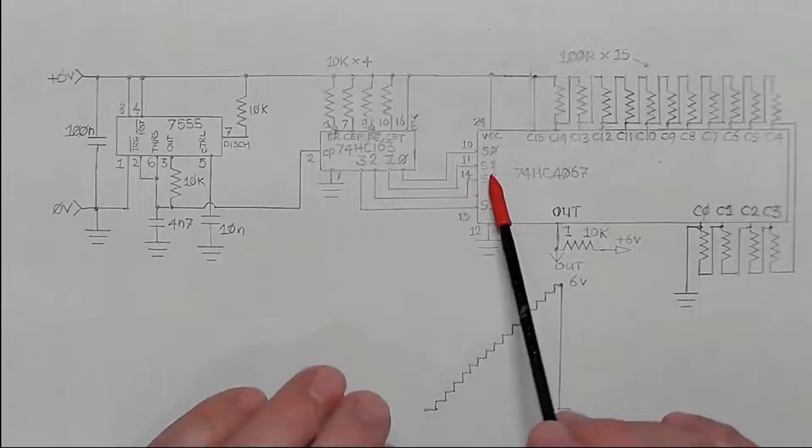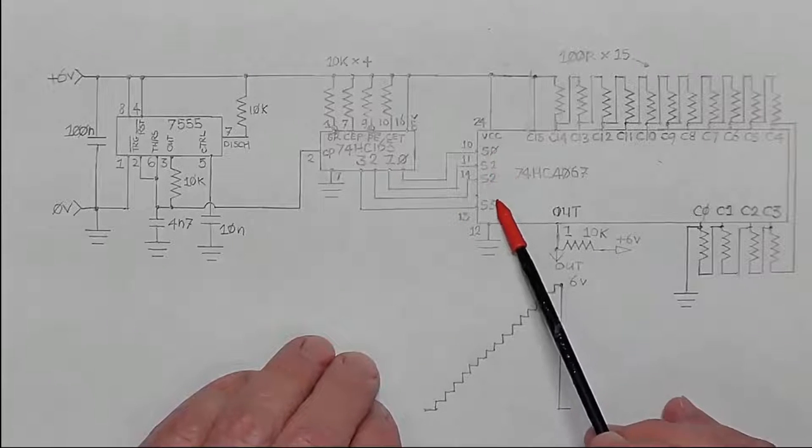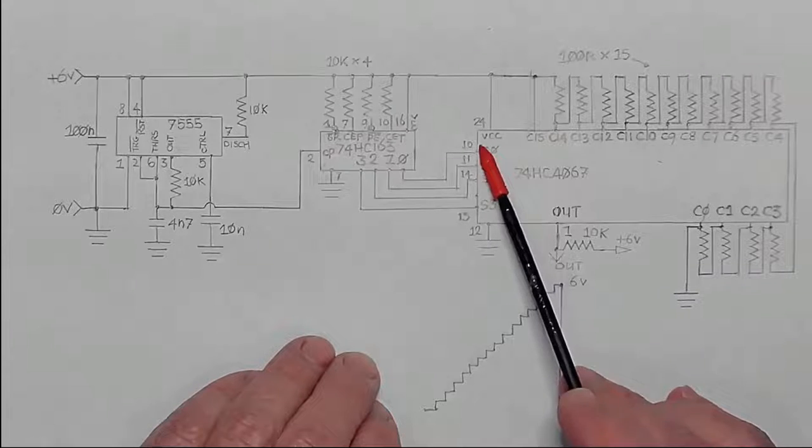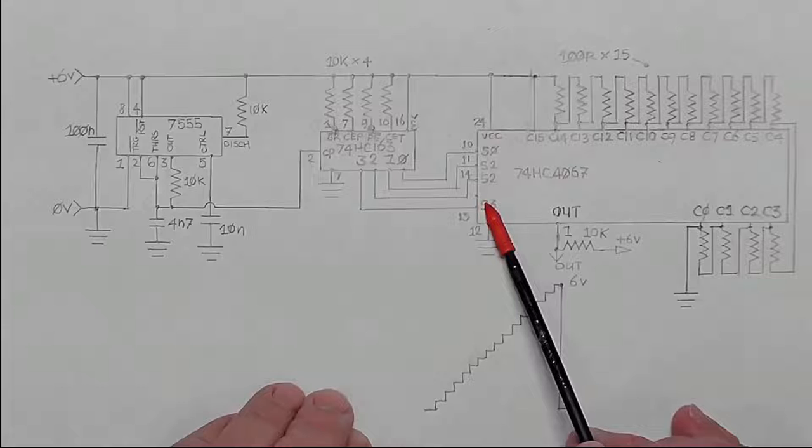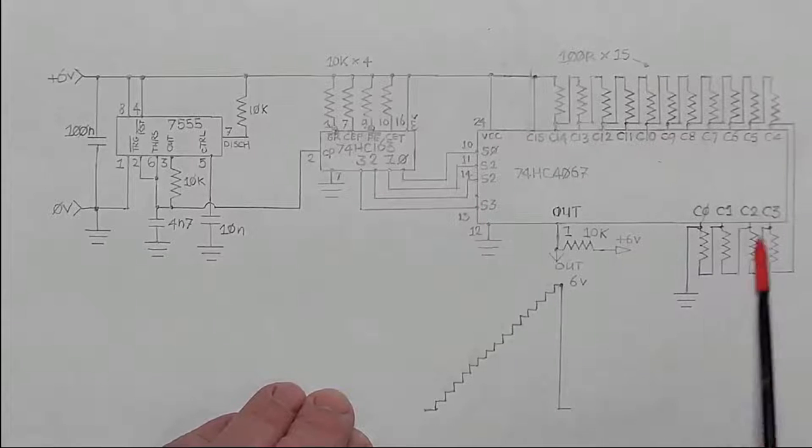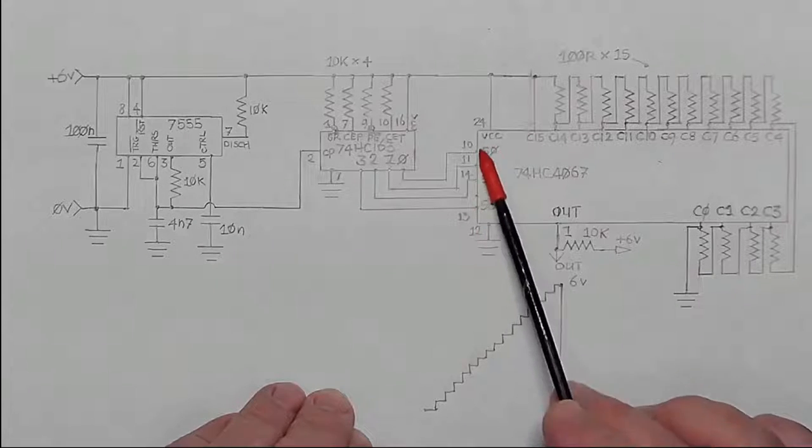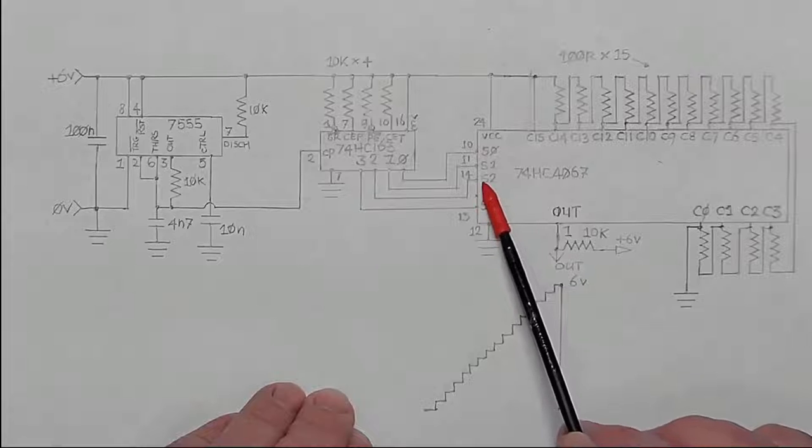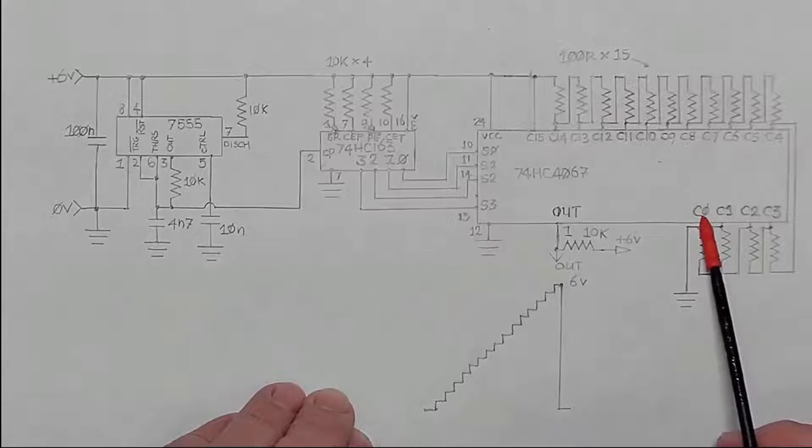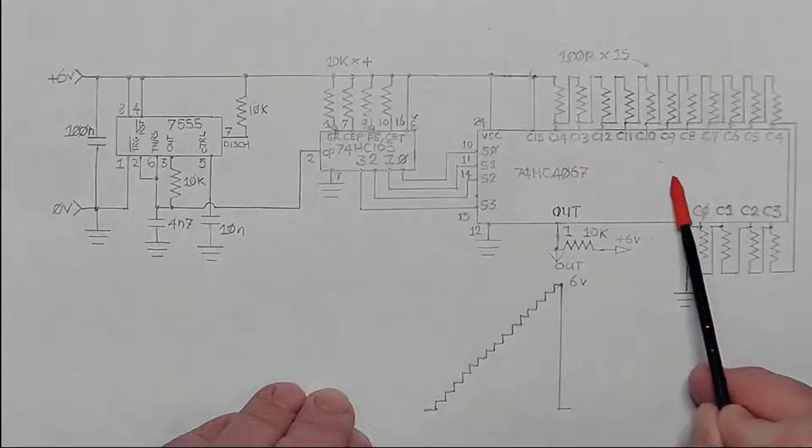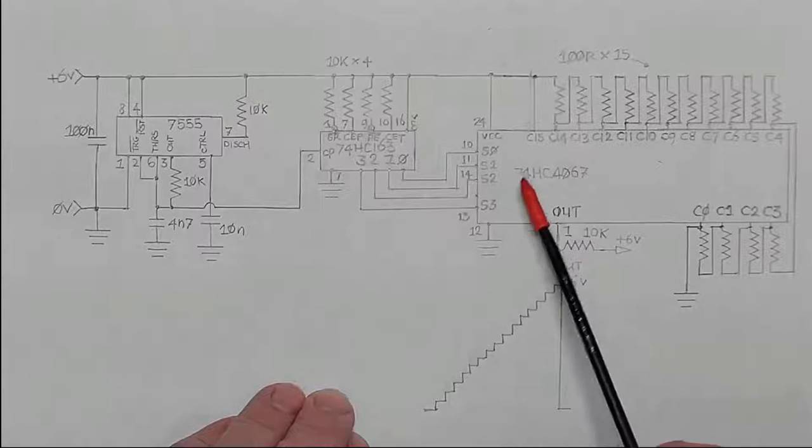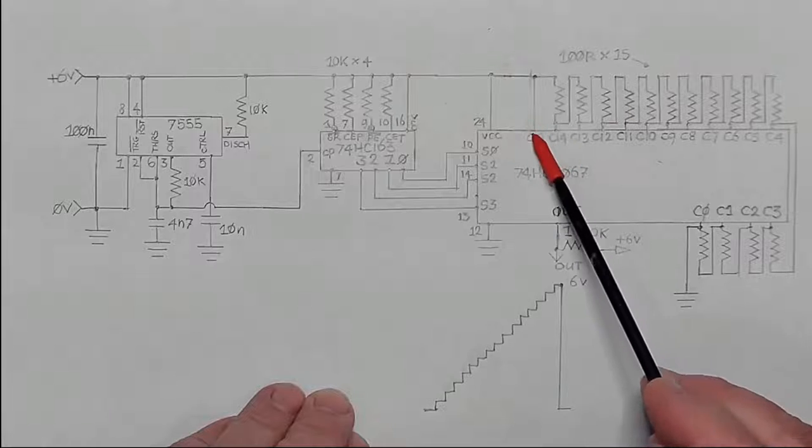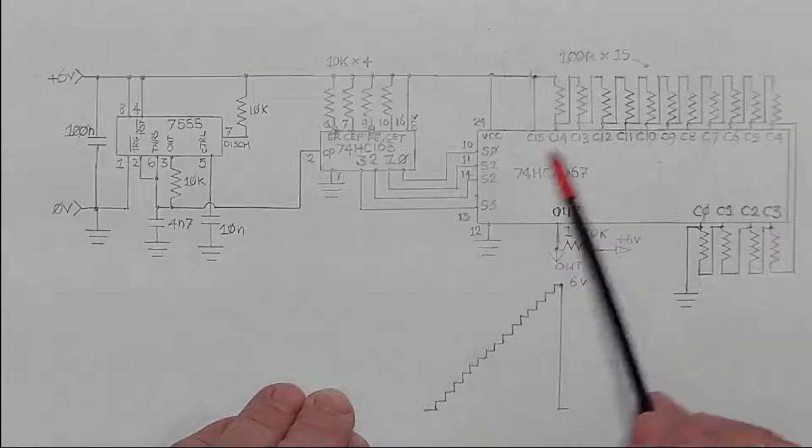As you can see over here, it is addressing S0 to S3. These are the four address inputs. Those guys here select one of 16 channels depending on the count that is presented here. If it's 0000 it would be C0 channeled to the output. If it is 1111 it would be C15 that will be channeled to the output and anything in between.